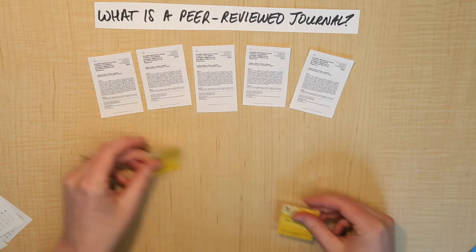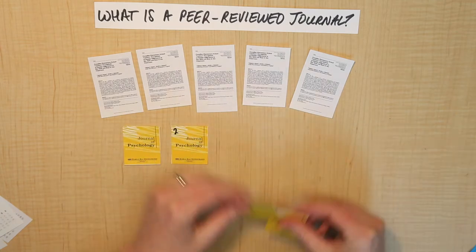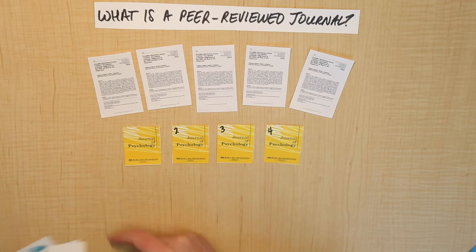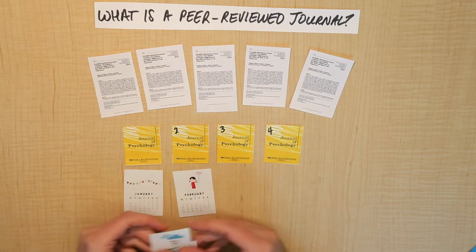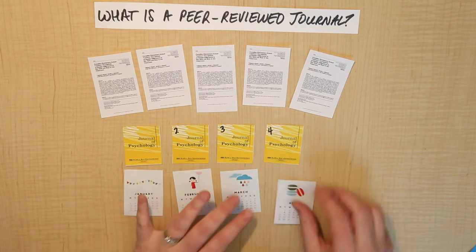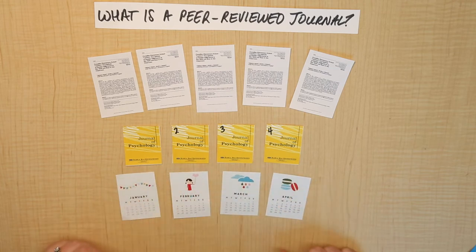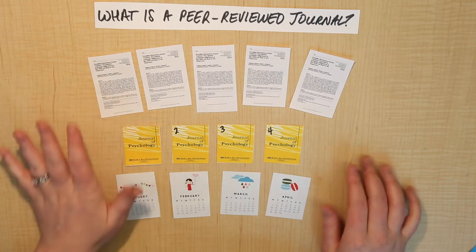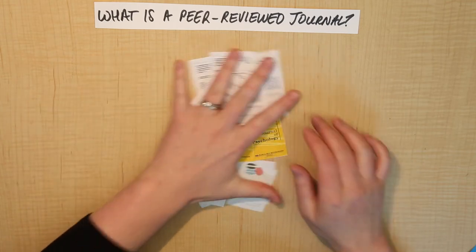We learned about how journals get published throughout the year. There might be four different issues of the same journal published throughout the year, and a different collection of articles will be in each one. So that was what is a peer-reviewed journal.